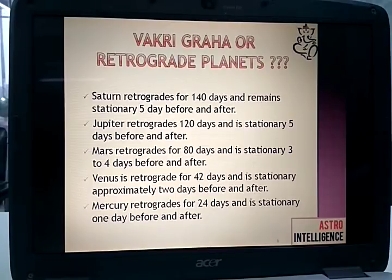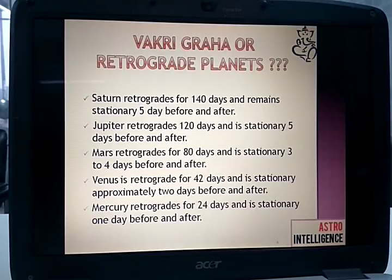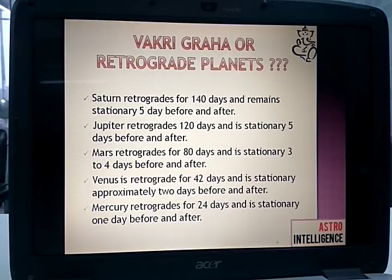Saturn retrogrades for 140 days and remains stationary 5 days before and after. Jupiter retrogrades for 120 days and is stationary 5 days before and after. Mars retrogrades for 80 days and is stationary 3 to 4 days before and after. Venus is retrograde for 42 days and is stationary approximately 2 days before and after. Mercury retrogrades for 24 days and it is stationary 1 day before and after. These are the normal periods of retrogression for the five planets which can become retrograde.